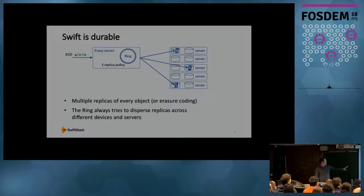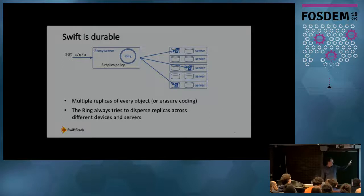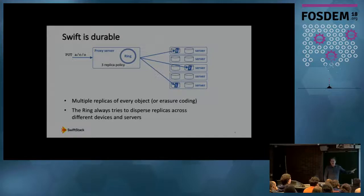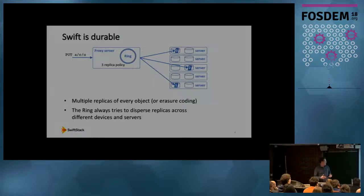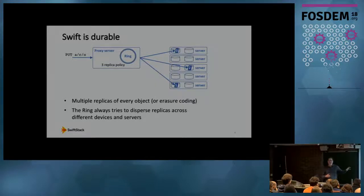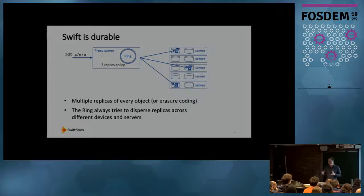That request is handled by a proxy service which will write three replicas of the object onto three disks in a pool of storage servers. At the heart of Swift is a component we call the ring, which is a form of consistent hashing. The ring is always trying to disperse replicas across both disk devices and servers in the storage pool. That's how Swift achieves durability — we always have more than one copy of an object written to different disks on different servers.